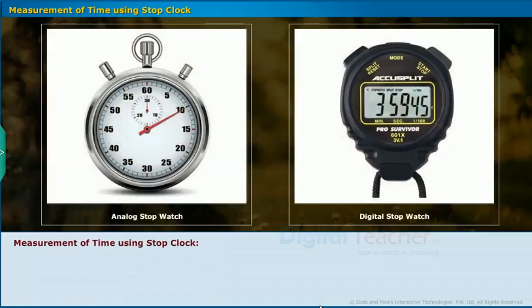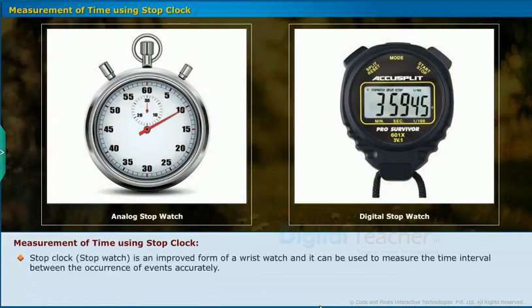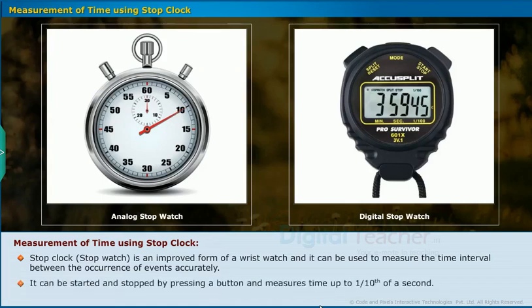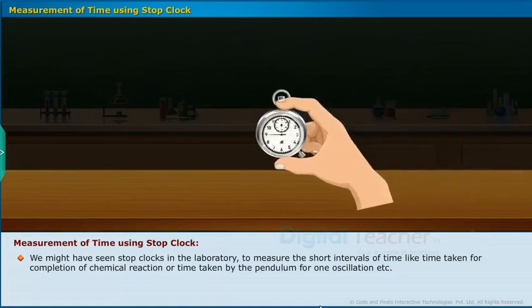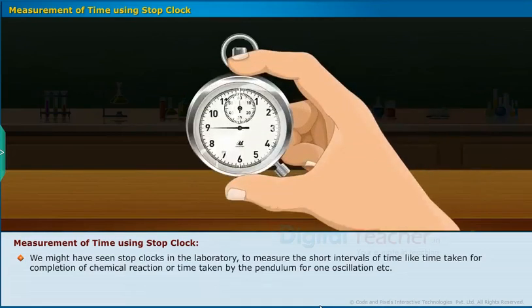Here, we are going to study about the measurement of time using stop clock. Stop clock or stopwatch is an improved form of a wrist watch and it can be used to measure the time interval between the occurrence of events accurately. It can be started and stopped by pressing a button and measures time up to one tenth of a second. We might have seen stop clocks in the laboratory to measure short intervals of time like time taken for completion of chemical reaction or time taken by the pendulum for one oscillation, etc.